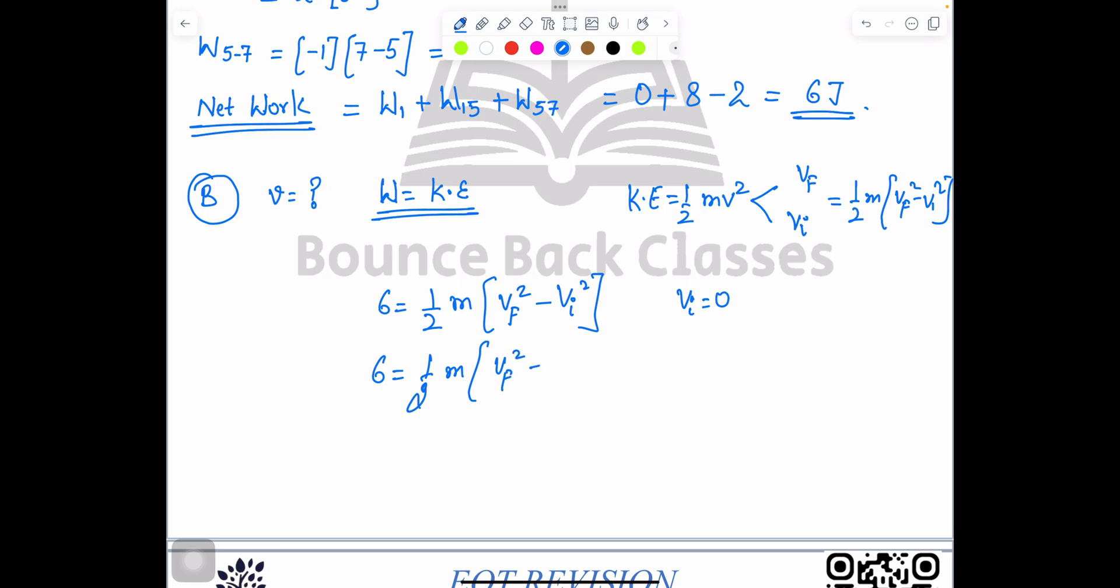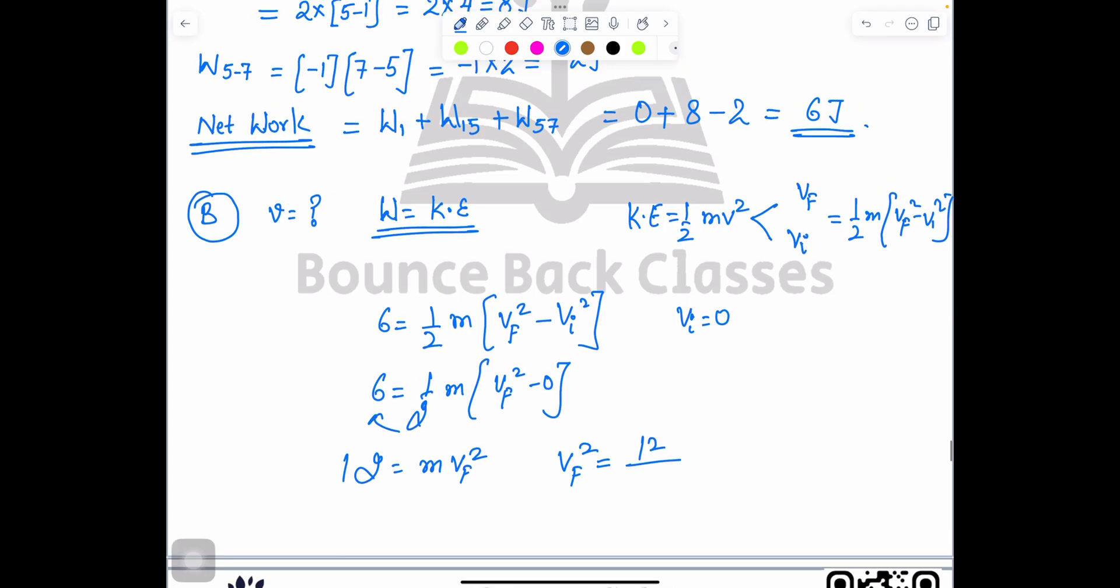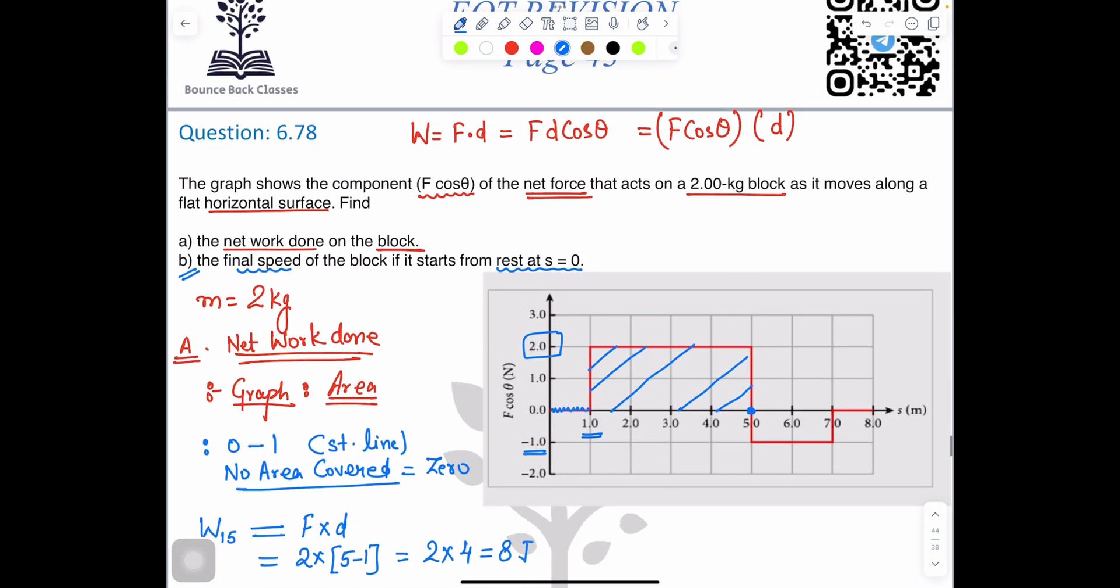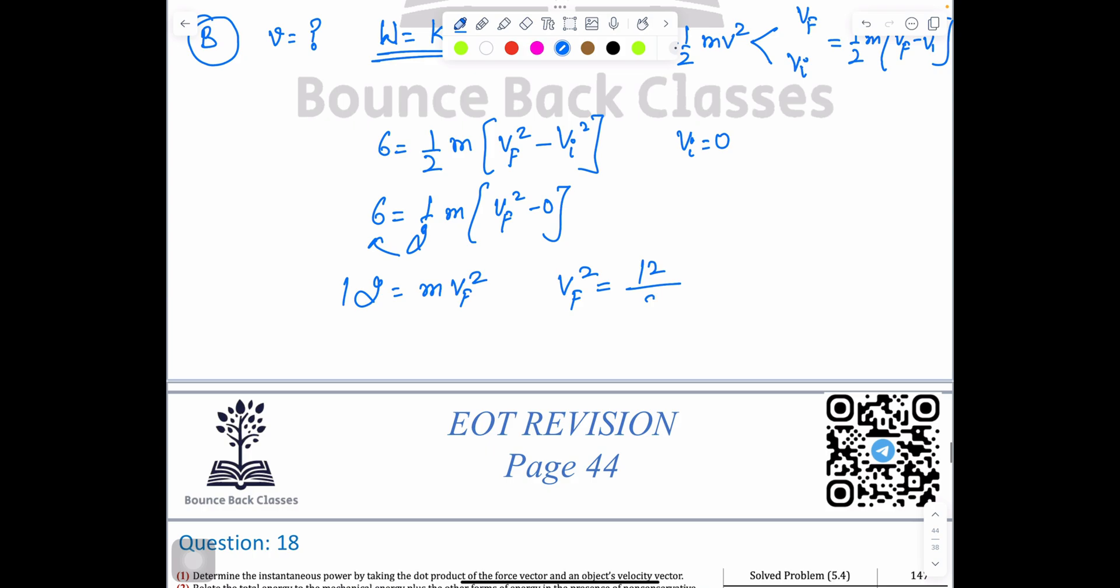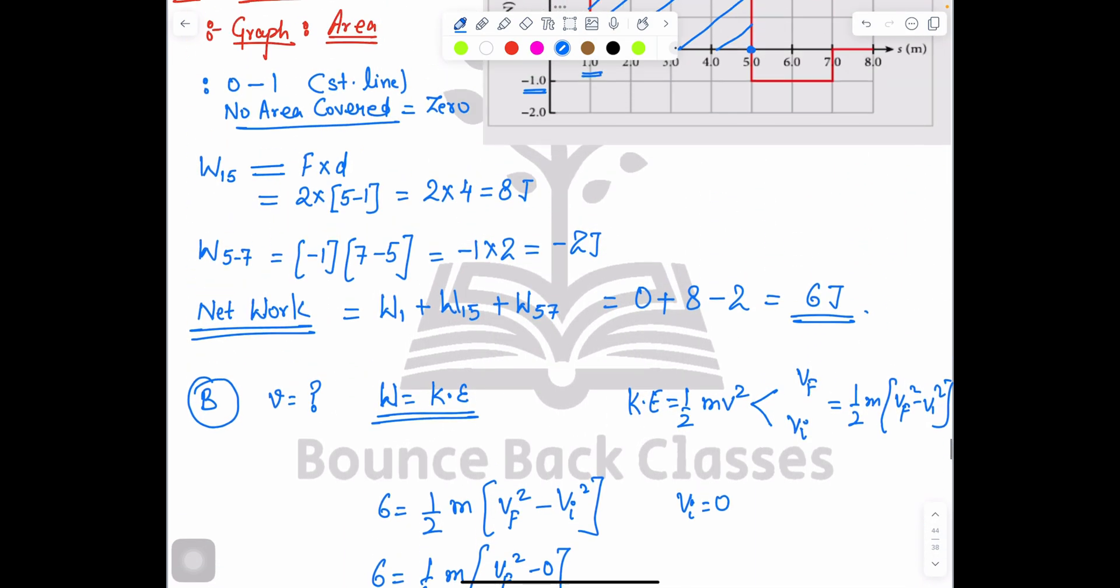As it starts from rest, v initial is 0. So 6 equals half m v_f squared minus 0. Take 2 to the other side: 12 equals m v_f squared. So v_f squared equals 12 divided by mass. Mass is 2 kg, so 12 divided by 2 equals 6. v squared equals 6, so v equals root 6, which equals 2.45 meters per second.